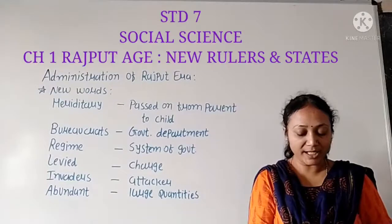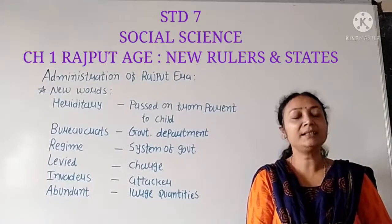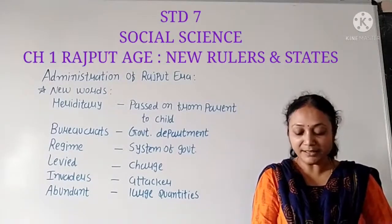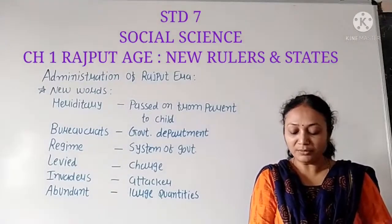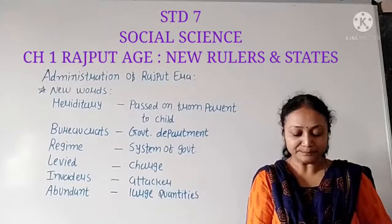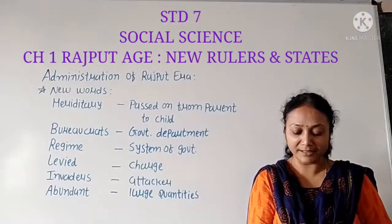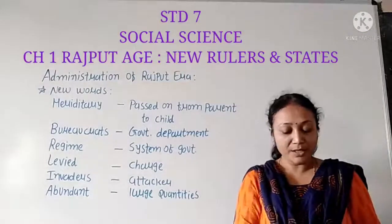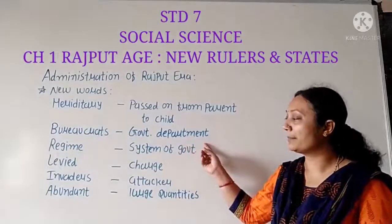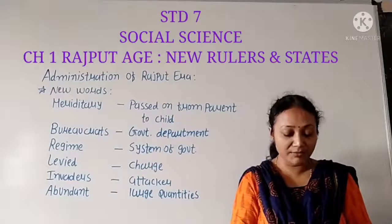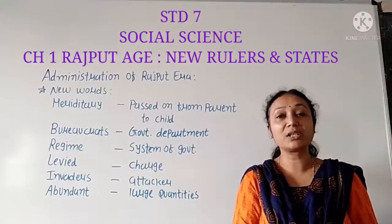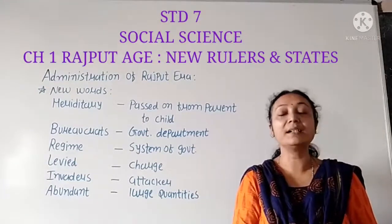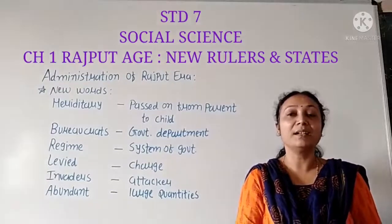The final decision on every policy was taken by the king. At the end, all decisions were taken by the king. The bureaucrats of the nation held positions like Mahapratihar and Dandanayaka. So there were two types of officials: Dandanayaka and Pratihar.